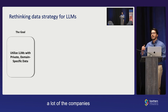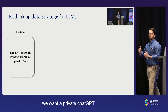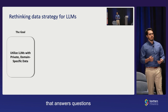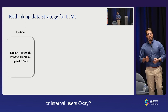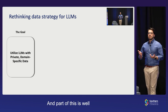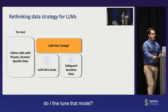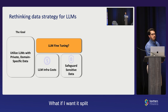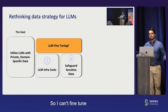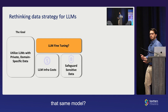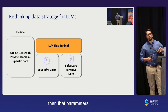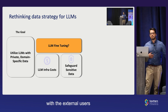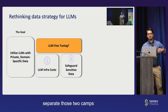What's the goal? Well, a lot of the companies that we talk to, the goal is: we want a private ChatGPT. We want our own documents, and we want a ChatGPT that answers questions either for external or internal users. Part of this is, do I fine-tune that model? What about the infrastructure costs, or safeguarding that data? What if I want it split between external and internal users? If I use the same fine-tuned model, the parameters inside it know things that they might share with external users. So how do I separate those two camps?